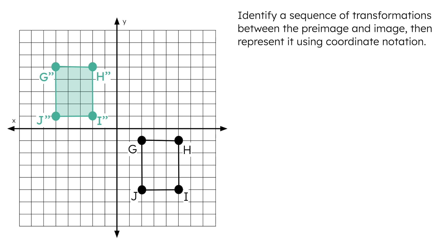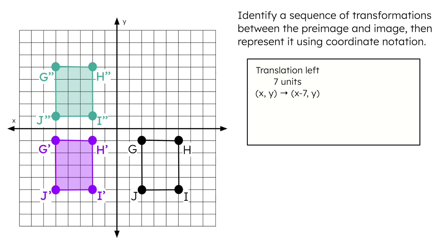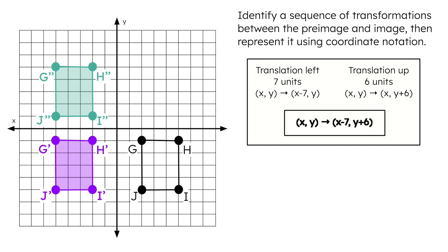Counting the boxes, the pre-image could have first translated left 7 units. The coordinate notation that describes this translation is (x − 7, y). Then the pre-image would have translated up 6 units to complete the sequence. That translation increases the new y-coordinate by 6. The single coordinate notation describing the entire sequence of transformations will be (x − 7, y + 6).